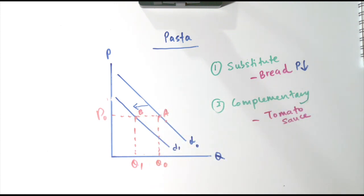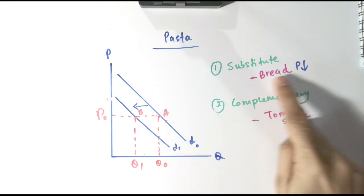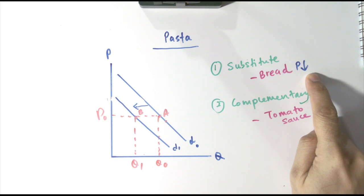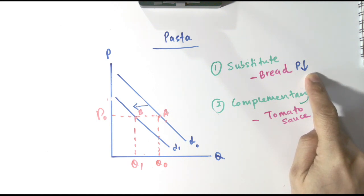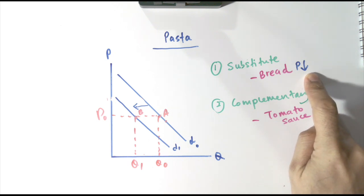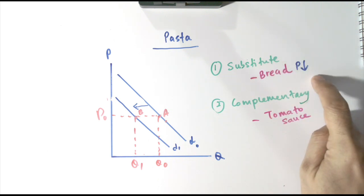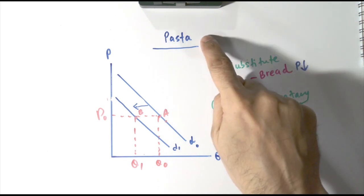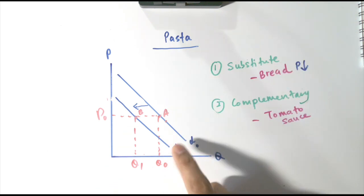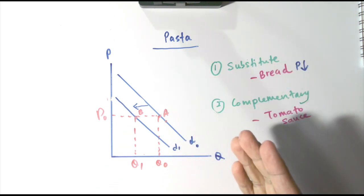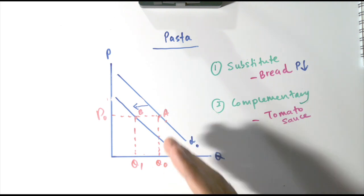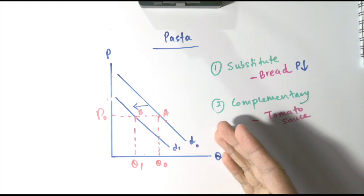And if the price of bread increases, then rational consumers are going to shift from buying bread to buying pasta, so the demand for pasta will increase and shift to the right.